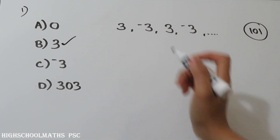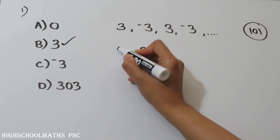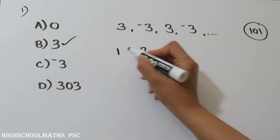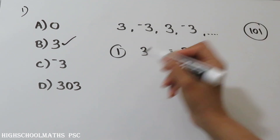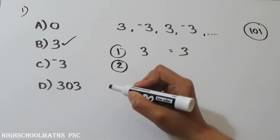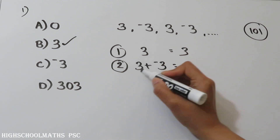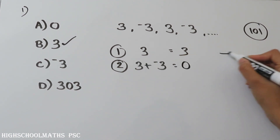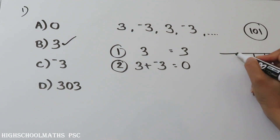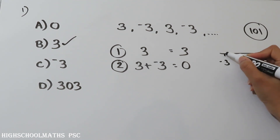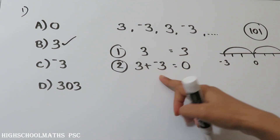The first term is 3. Now, what do we think about 2 terms? The sum of the first two terms: 3 plus minus 3, which is 3 minus 3. The sum is 0. So 3 plus minus 3 equals 0.